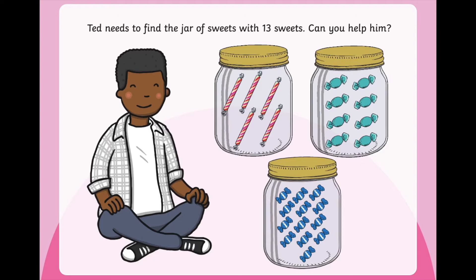This boy is called Ted and he needs to find the jar of sweets that has 13 in it. Can you count all of the sweets in each jar and find out which one has 13? Those sweets look tasty, don't they! If you need a little more time, you can pause the video. Okay, let's see if you're right — I'm sure you are!